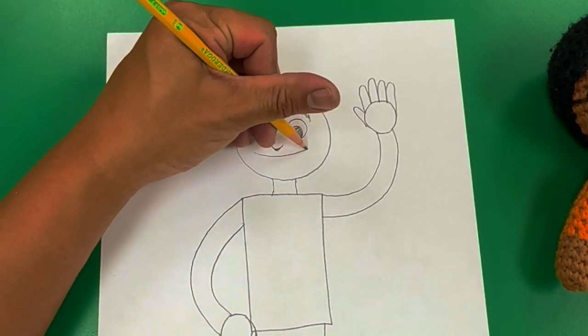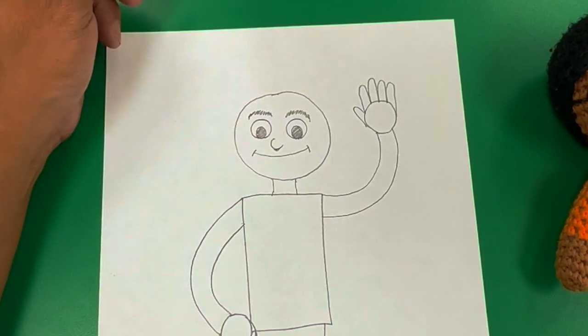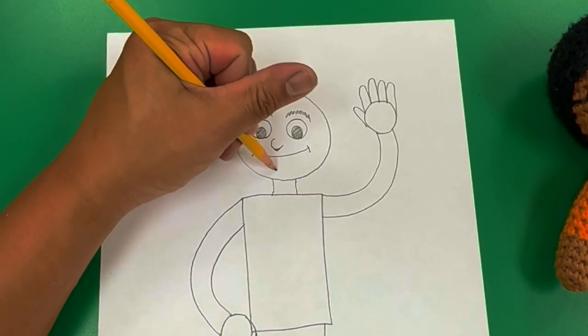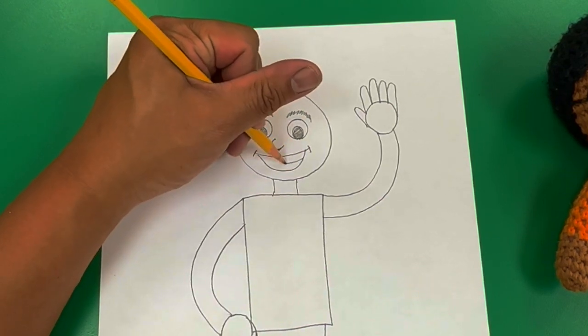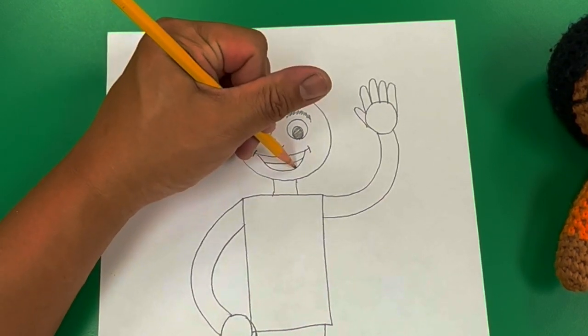And I'm going to give myself a big smile. So I'm doing that with a curved line. I'm going to draw another curved line underneath so that I can show my teeth and my tongue.